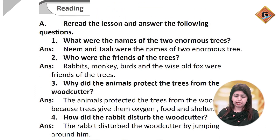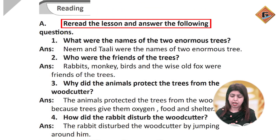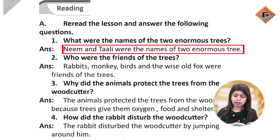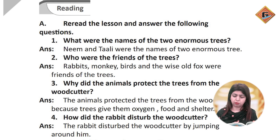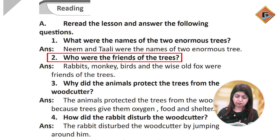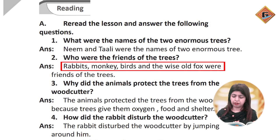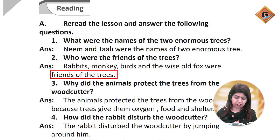Reading: Reread the lesson and answer the following questions. What were the names of the two enormous trees? Neem and Tali were the names of the two enormous trees. Who were friends of the trees? Rabbits, monkeys, birds, and the wise old fox were the friends of the trees.